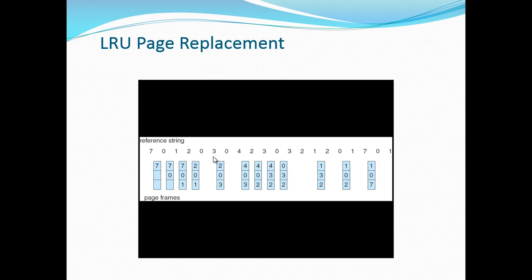When the next process 3 comes, it looks through processes 2, 0, and 1 and finds that 0 and 2 are newly referenced while 1 is the oldest referenced one, so 1 is replaced by 3. When 0 occurs again, it is already in the frame and a page fault occurs. The process continues in a similar fashion.